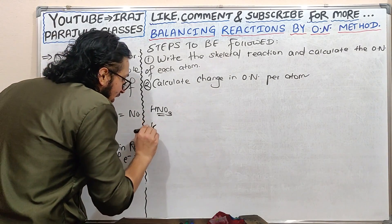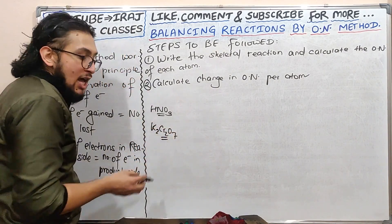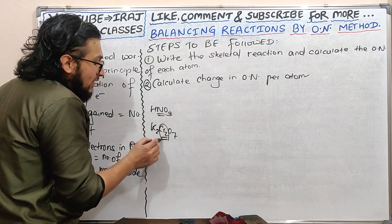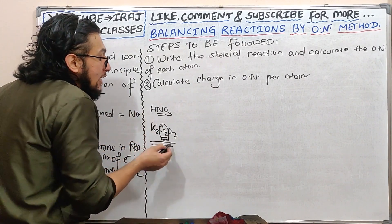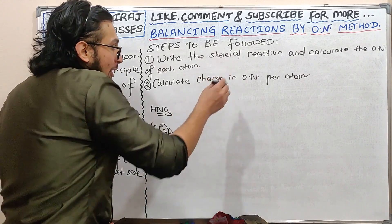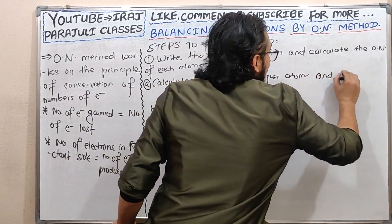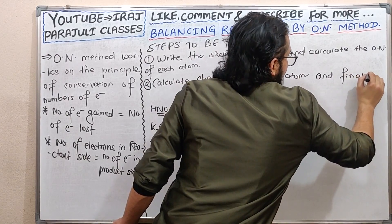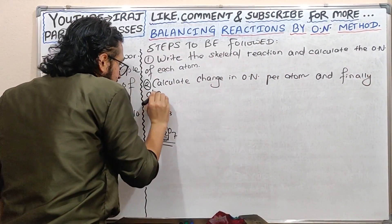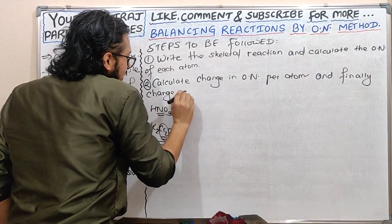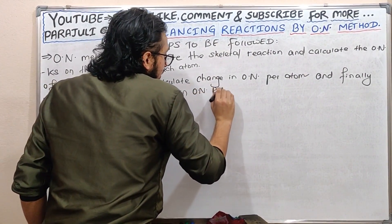Here is the CR to make chromium. Here is the chromium. Now, this is the per molecule. I am going to take 300 per atom and finally change. O and per molecule.